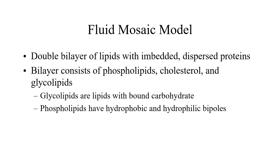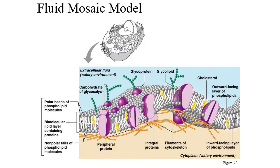That membrane isn't a solid structure — it's actually a fluid mosaic. It has a double bilayer of lipids, called a phospholipid bilayer, made up largely of phospholipids and cholesterol, with different types of lipids and proteins embedded in it as well. Glycolipids are structures that can be bound to carbohydrates, and phospholipids make up the large quantity of the entire cell membrane.